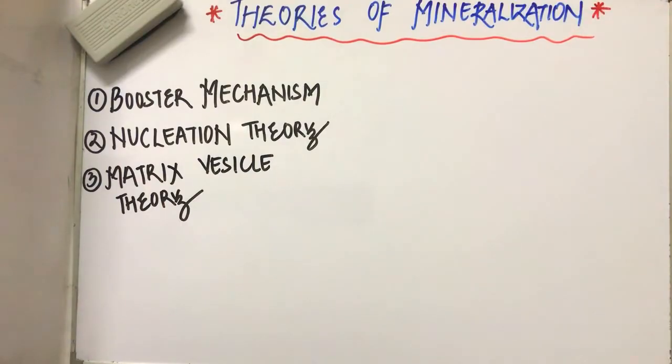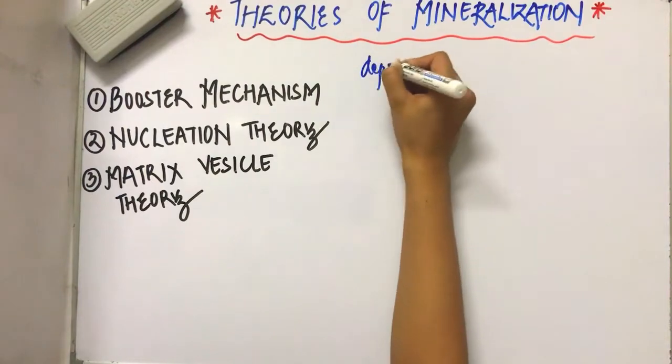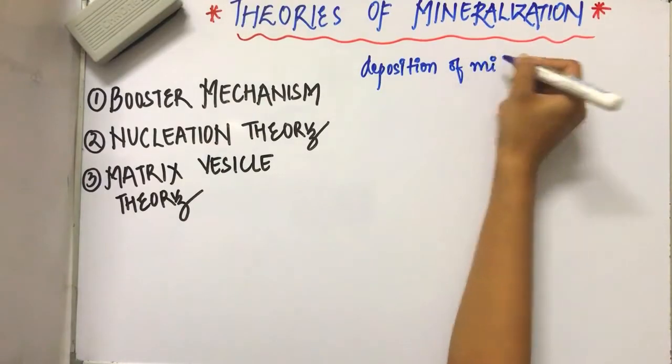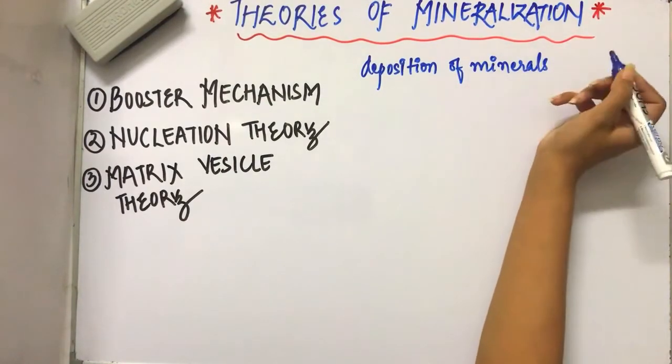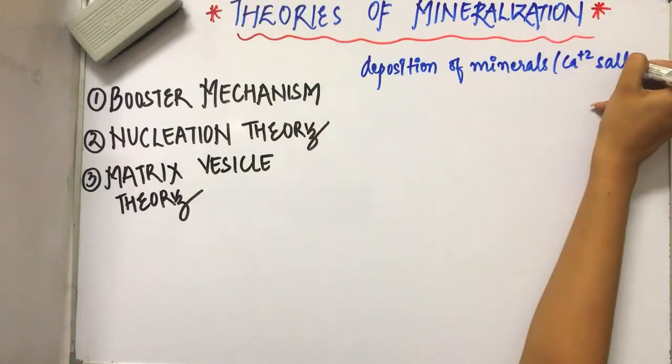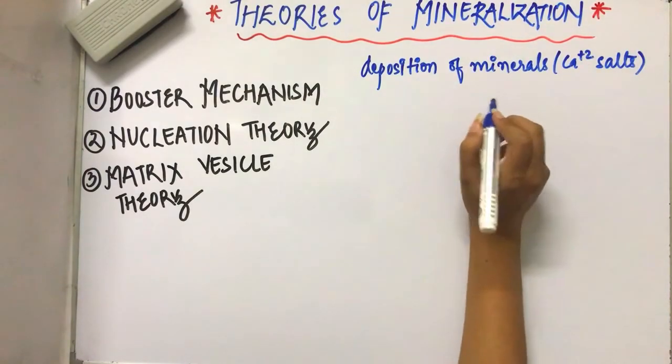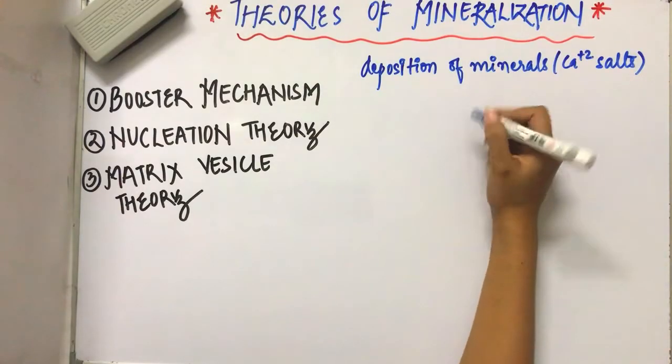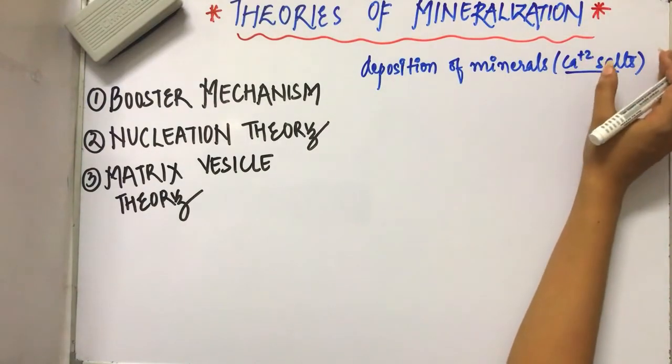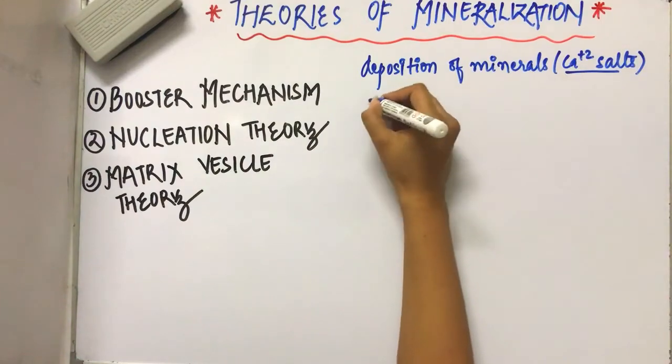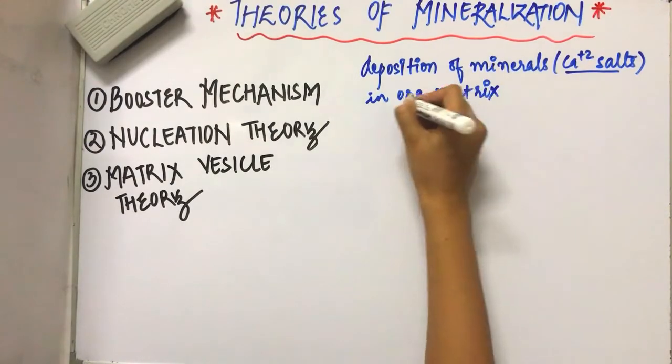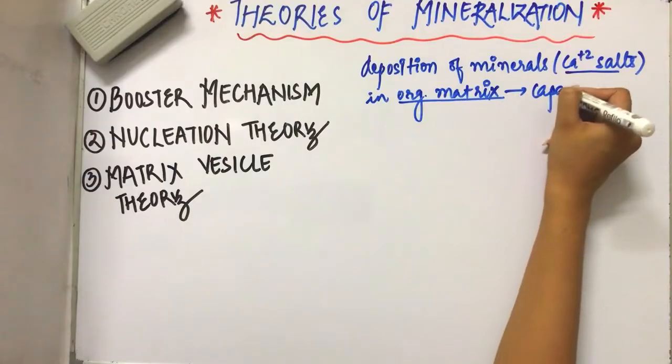It is the process of deposition of minerals. And what do we mean by minerals here? Insoluble calcium salts in the organic matrix, which is capable of accepting the minerals. So deposition of minerals, that is insoluble calcium salts - where is this happening? It is in the organic matrix. Why is it taking place in the organic matrix? Because the organic matrix is capable of taking the minerals.